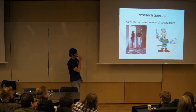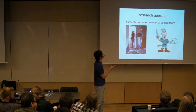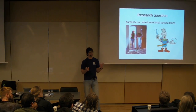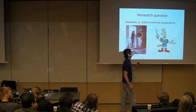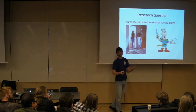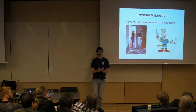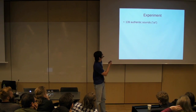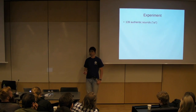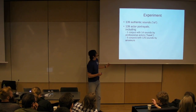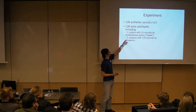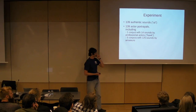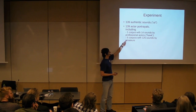The research question in this study was quite funny. I was interested in comparing authentic and acted emotional vocalizations — people laugh, scream, groan, make all sorts of funny noises. The way people usually study them is by asking actors to portray a particular emotion. I was interested in whether these portrayals sound good enough, if they are close to what happens in real life. To do this, I took 139 authentic sounds from social media — recorded from YouTube — and 139 actual portrayals from a few previous studies: six different collections, one by professional actors and five by ordinary people.